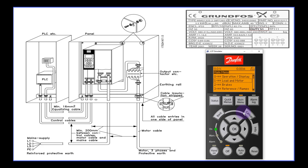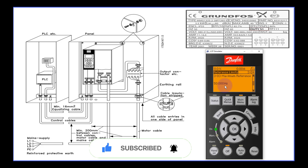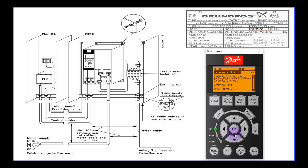The third step is to change the reference. Press OK, then select 'reference limit.' For minimum reference, depending on your process requirement, you can set the minimum and maximum reference limit. I will set minimum to 0 Hz. Then press the down arrow key and change the maximum reference — I want 50 Hz, so I press OK and key in 50 Hz. Once done, press the back button. Then go to 'references' and press OK to select it.